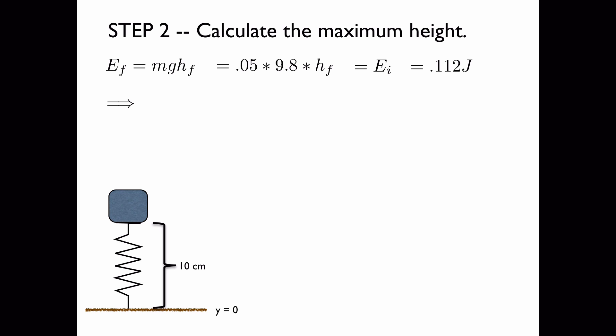So we can rearrange this, and it implies that the final height is equal to this, which, upon plugging into our calculator, gives 0.229 meters, or, after turning it into centimeters and taking account of significant figures, we have a maximum height of 23 centimeters. And that concludes video 5.4.